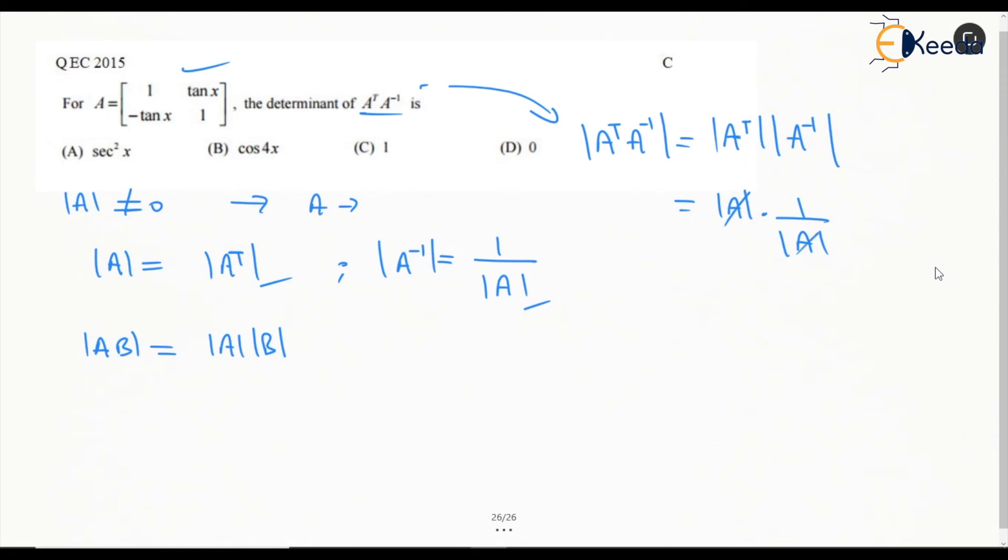So this gets cancelled and the answer is going to be 1. So C is the answer. This determinant is going to be 1.